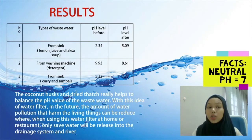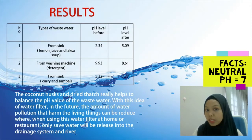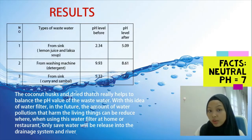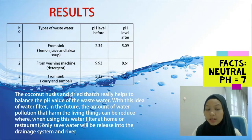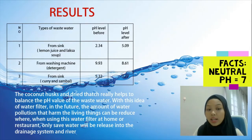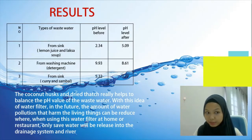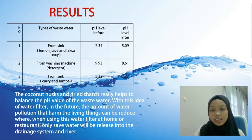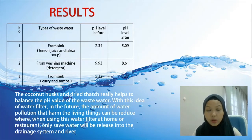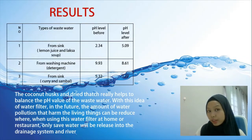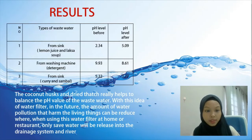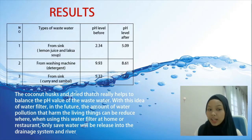As the result, you can see that all the different types of wastewater have been neutralized. The first sample went from pH 2.34 to 5.09, the second from pH 9.93 to 8.61, and the last from pH 5.32 to 7.77. The coconut husk and dry grass really help to balance the pH value of the wastewater. With this water filter idea, in the future, the amount of polluted water that harms living things can be reduced.